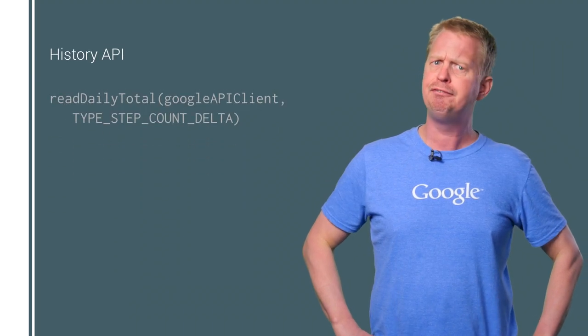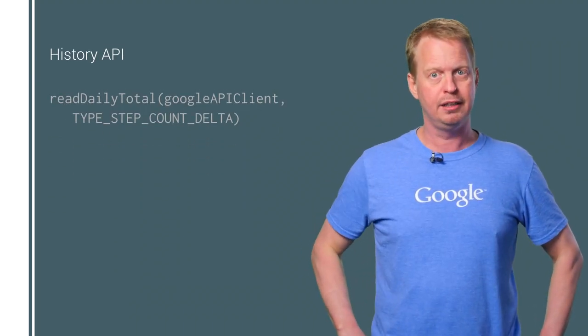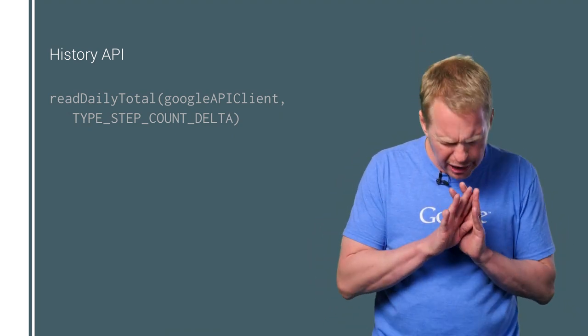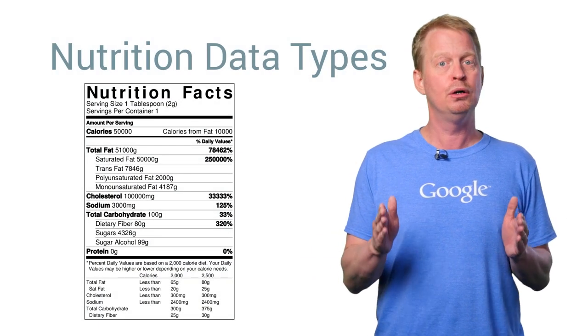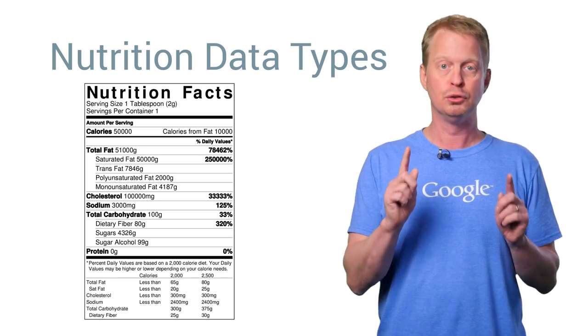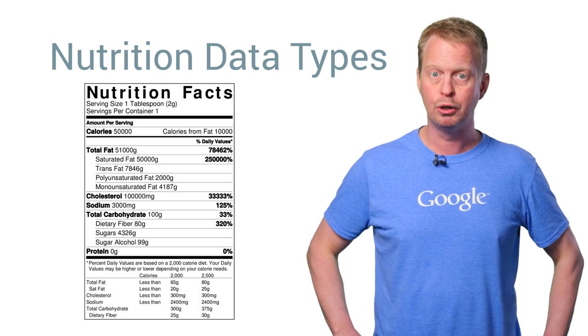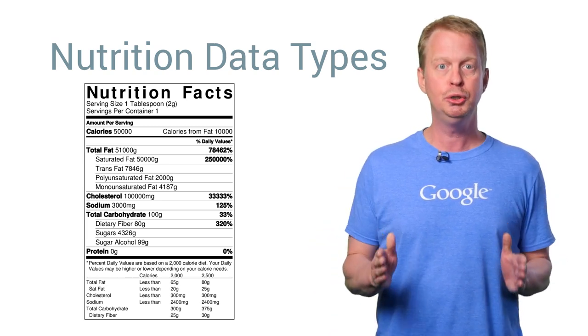And since everyone's always talking about how many steps everyone's taken every day, the step count delta data type can now be queried by all apps on all devices without requiring any authentication. But fitness is not only about activity — it is also about what you put into the body. Therefore, nutrition data types have been added, enabling you to record things like protein, fat, cholesterol, sodium, and more.